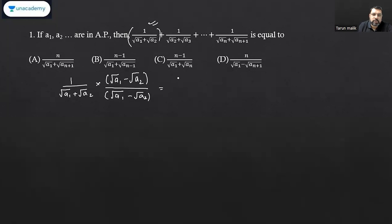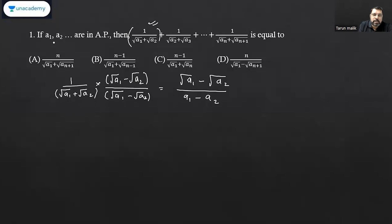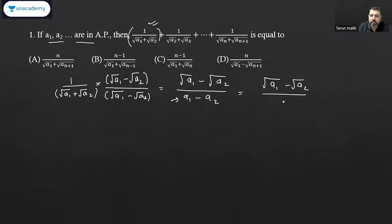So in the numerator it will be (√a₁ − √a₂), and in the denominator it will be (a + b)(a − b) = a² − b², so the square root cancels and we get (a₁ − a₂). Since a₁, a₂, a₃ are in arithmetic progression, this difference of consecutive terms is simply d. So the first term becomes (√a₁ − √a₂) / d.